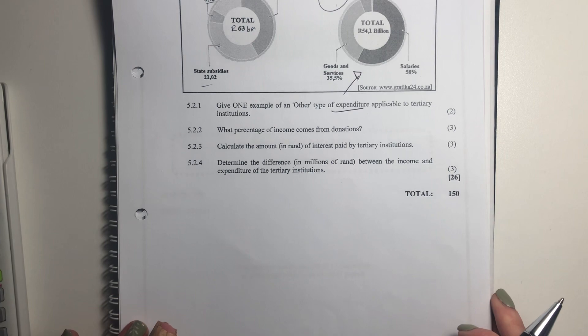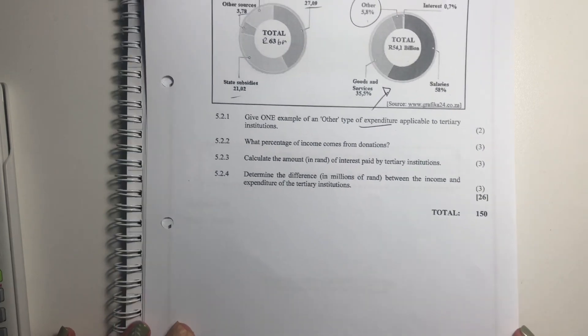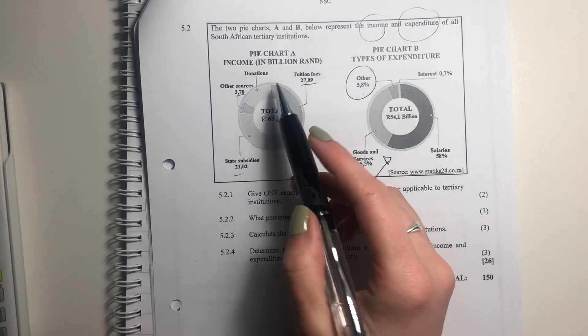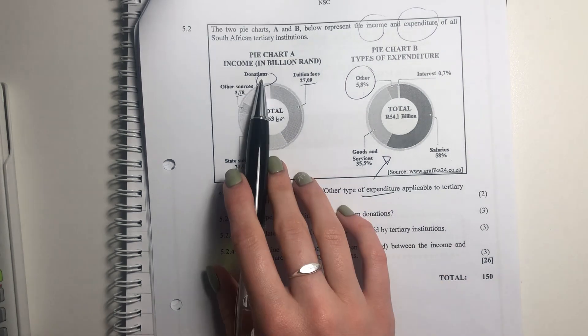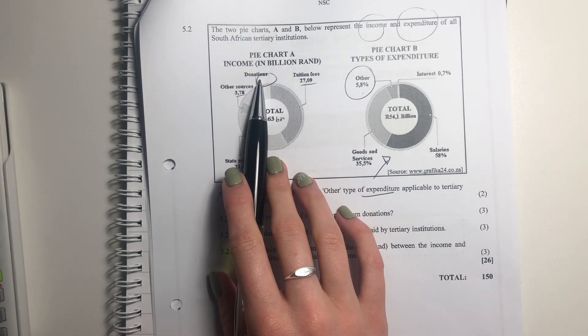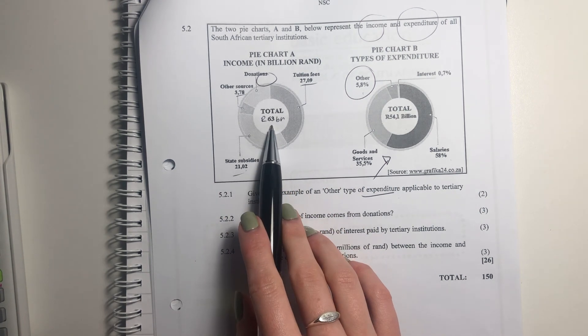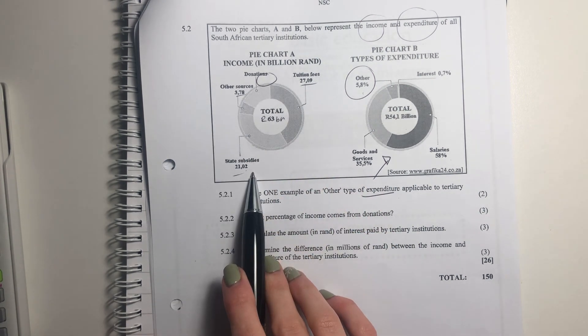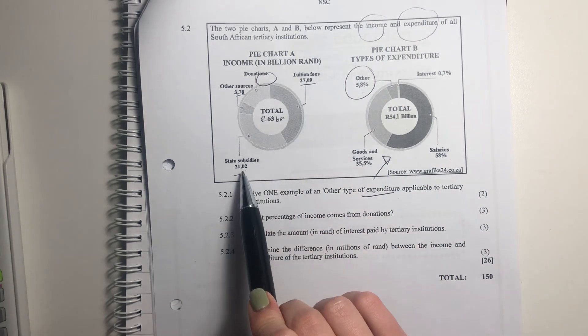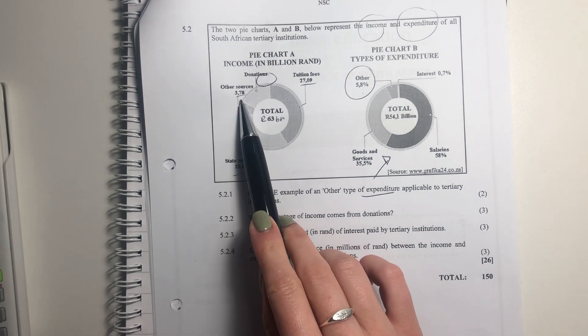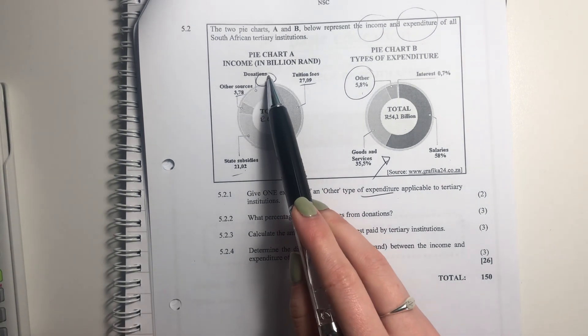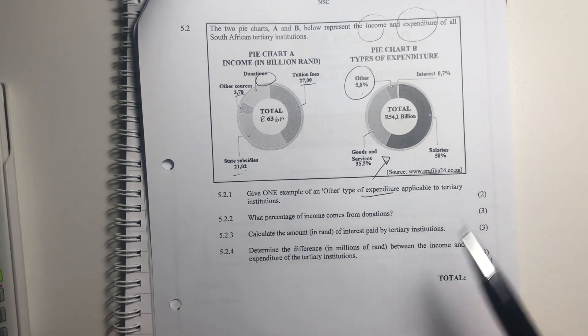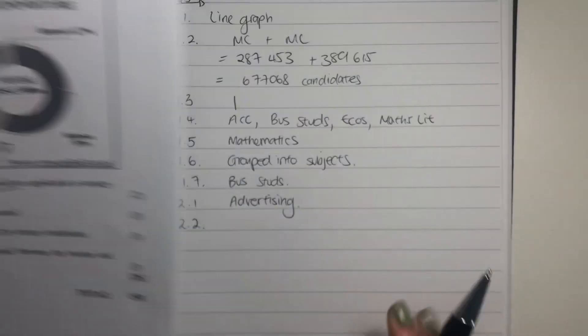Then it says, what percentage of income comes from donations? Now, this is important. They haven't told us the amount of donations, and they haven't represented these in terms of percentages. So there's a bit of work we have to do here. How do we get the amount of donations? Well, we know the total income is 63, and it's split into all of these. So we can say 63 minus tuition fees minus state subsidies minus other resources, and that leaves us with donations.